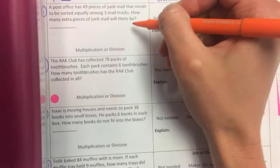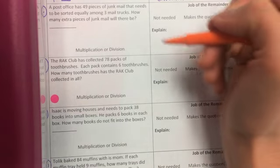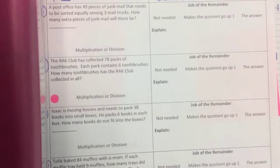Let me give you a rundown of how this works so that we can check over your child's homework and know what's going on. So this first one, a post office has 49 pieces of junk mail that needs to be sorted equally among three trucks. How many extra pieces of junk mail will there be?